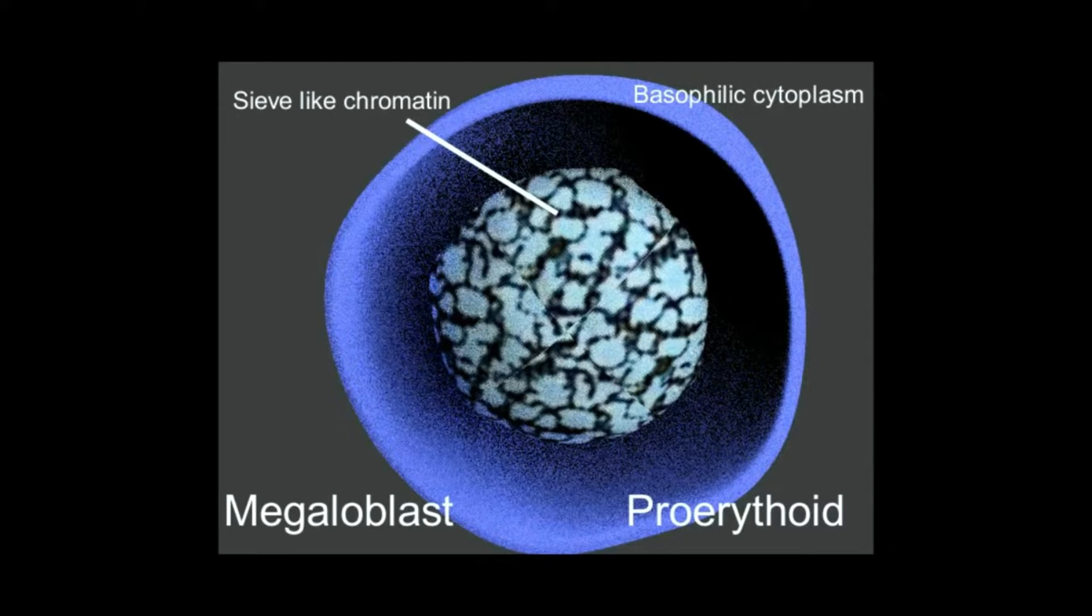These features are more evident in rapidly dividing tissues such as hemopoietic cells in the marrow, particularly the red blood cells and its precursors.